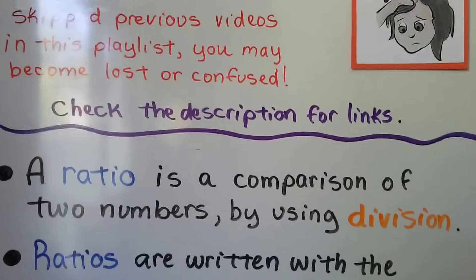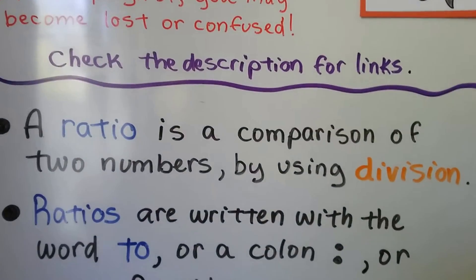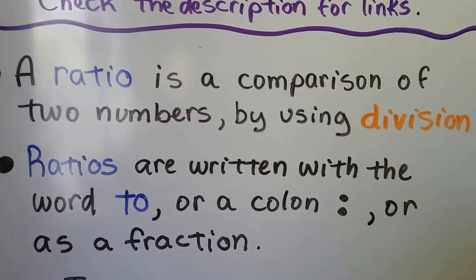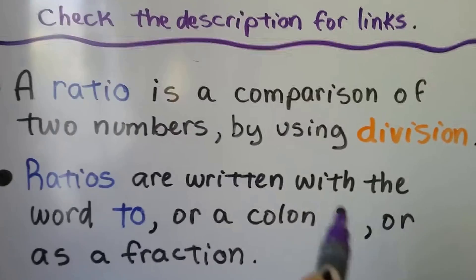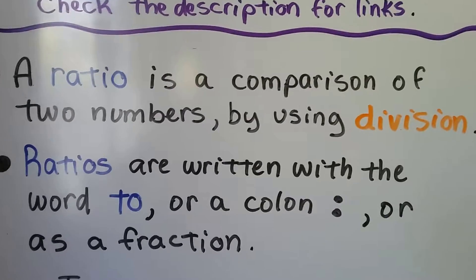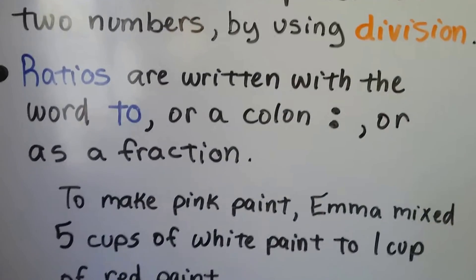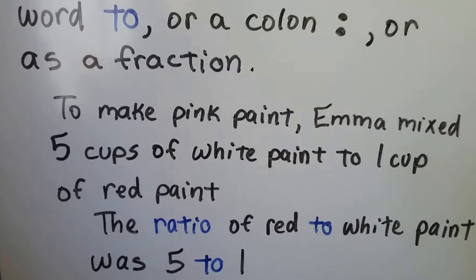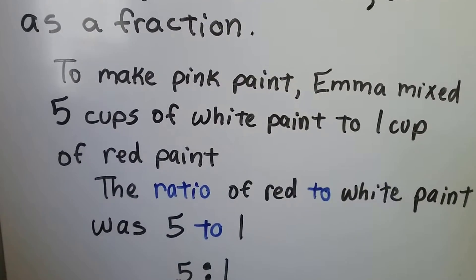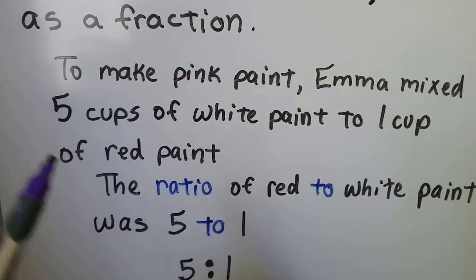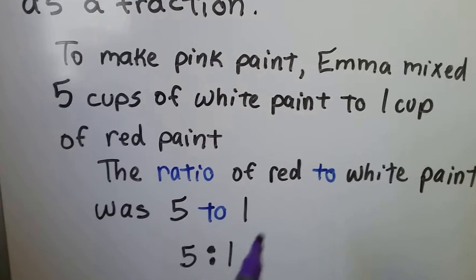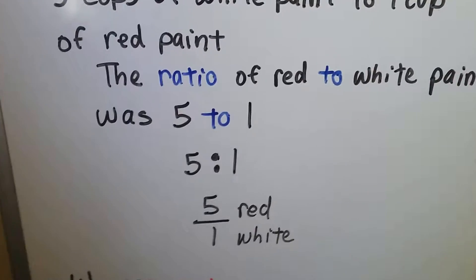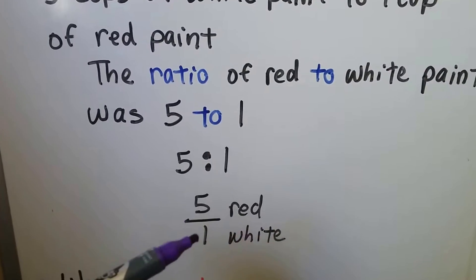A ratio is a comparison of two numbers by using division. Ratios are written with the word two, or a colon (these two dots), or as a fraction. To make pink paint, Emma mixed 5 cups of white paint to 1 cup of red paint, and the ratio of red to white paint was 5 to 1. We can write it 5 to 1 with the colon, or we can write it as a fraction as 5 over 1.